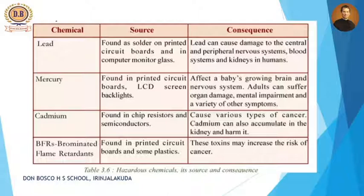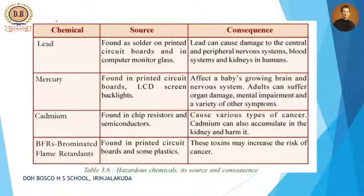First one is lead. It is a very toxic material. It is found as solder on the printed circuit board — PCB — and in computer monitor glass. Lead can pose damage to the central and peripheral nervous system, blood system, and kidneys in humans.